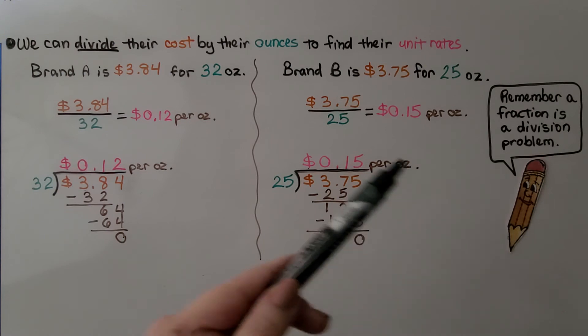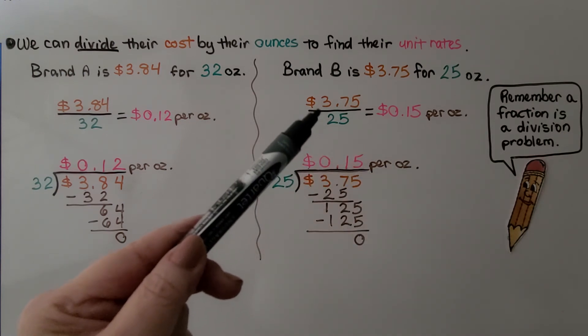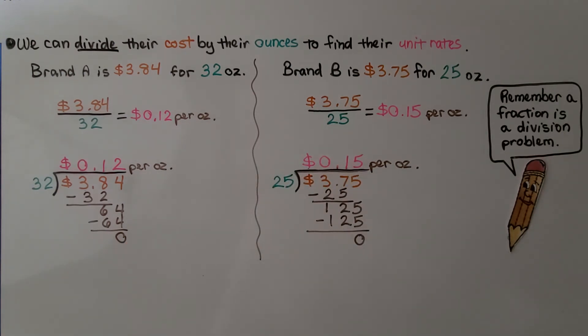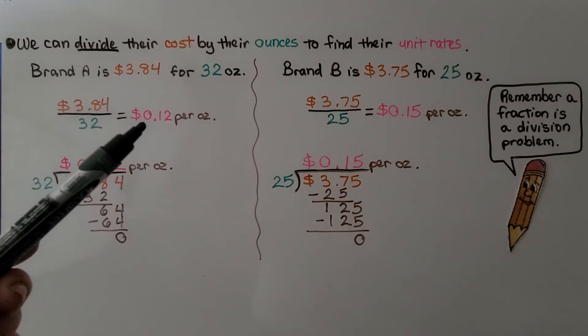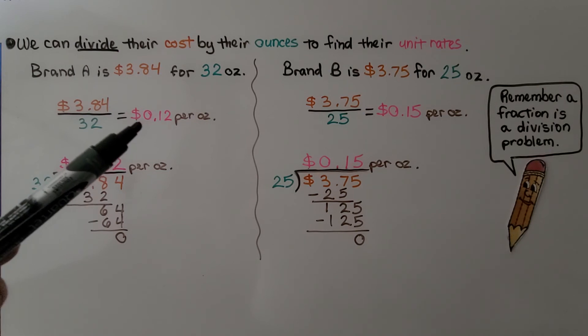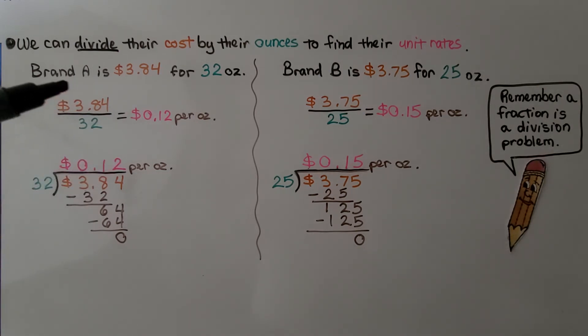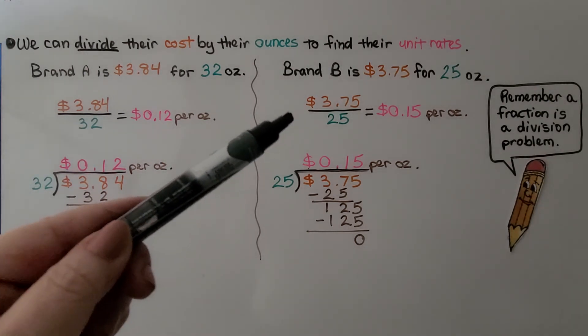Remember, a fraction is a division problem, it's like a little division problem. So the unit rate for Brand A is $0.12 per ounce because we took the total price over the amount of ounces. And we did the same thing for Brand B.